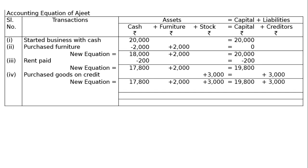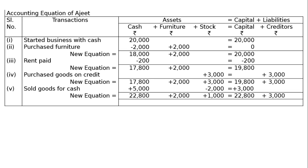The fifth transaction: he sold goods with a cost price of Rs. 2,000 for Rs. 5,000 on cash. Cash will be increased by 5,000 and stock is reduced by 2,000. There is a profit of Rs. 3,000 — selling goods costing 2,000 for 5,000. The final new equation: cash Rs. 22,800, furniture Rs. 2,000, stock Rs. 1,000, and capital Rs. 22,800 plus creditors Rs. 3,000. Both sides equal Rs. 25,800. This is the final answer.